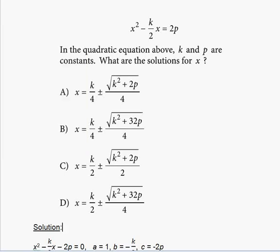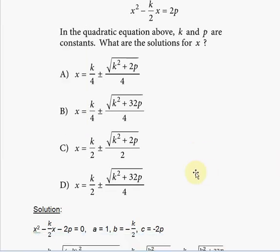Hello everyone, welcome to my free online tutorial for the new SAT math section. This is problem number 15, practice test for section 3, no calculator, found in the new SAT official study guide. The equation given is x squared minus 2kx divided by 2 equals 2 times P.